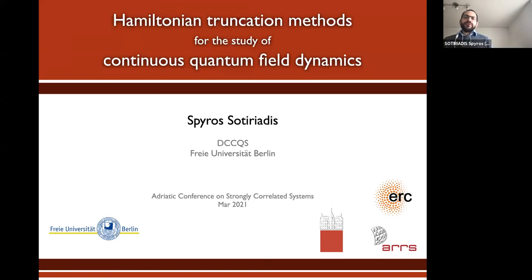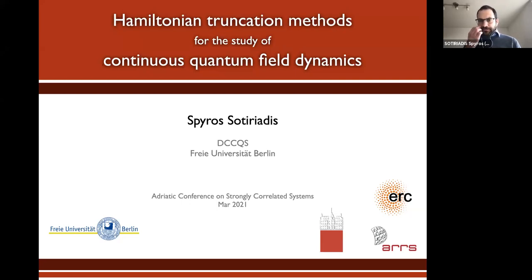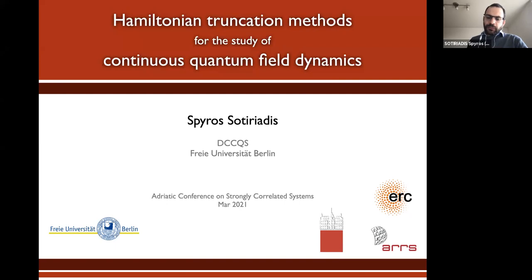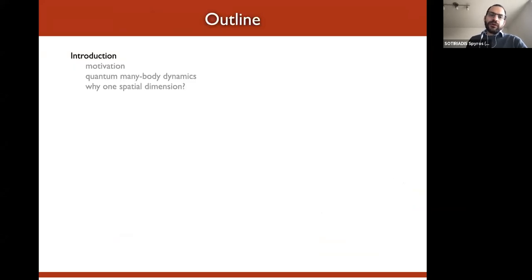I'm going to talk about Hamiltonian truncation methods, which is an old method but we recently revisited it with collaborators and applied it to the dynamics of continuous quantum field theory models. It's experiencing renewed interest because there are many recent applications — people from the high energy community are starting to look at it as an alternative to lattice QCD, and from our point of view it's one of the few methods available for the study of cold atom experiments that simulate quantum field theories.